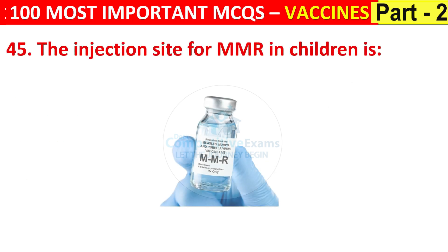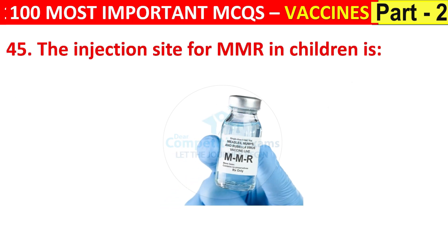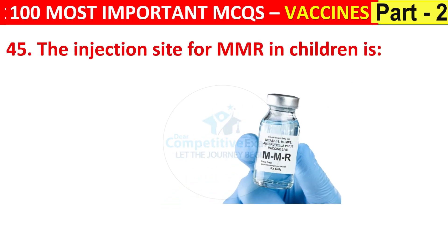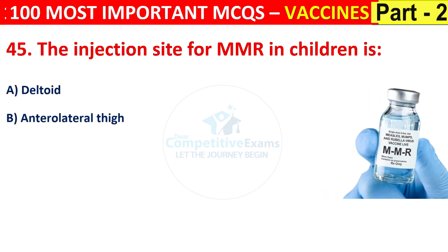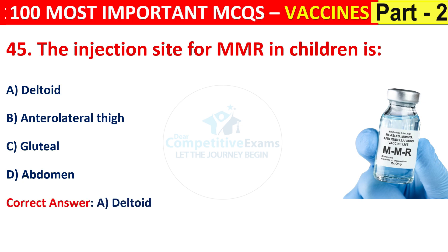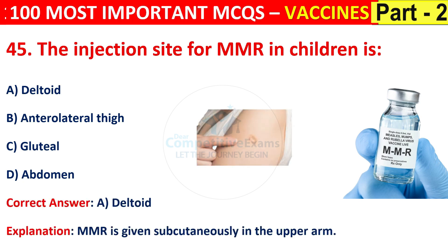Question number 45. The injection site for MMR in children is deltoid, anterolateral thigh, gluteal, or abdomen. The correct answer is A, that is deltoid. MMR is given subcutaneously in the upper arm, that is the deltoid.